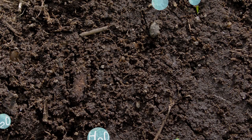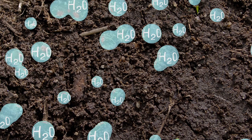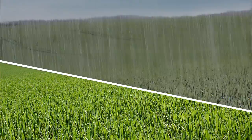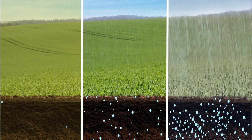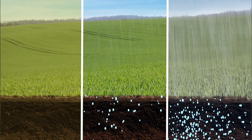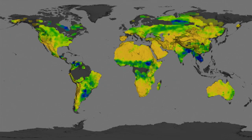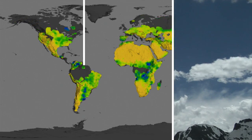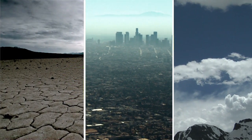Soil moisture is the water contained within the spaces of air between soil particles. The amount of water in the soil can vary due to drought, floods, irrigation, and changes in rainfall. Soil moisture measurements have many uses, from improving weather forecasts and climate models to refining drought and flood predictions.